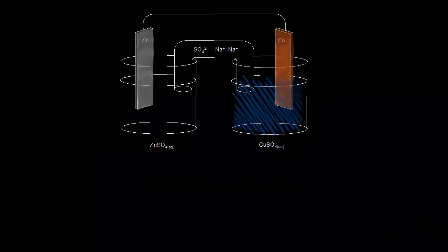Before we get into shorthand notation, let's review the structure of a galvanic or voltaic cell. A voltaic cell uses a spontaneous redox reaction to create an electric current. We already know what happens on the electrode on the left — the zinc electrode, the solid zinc, turns into zinc two plus ions.